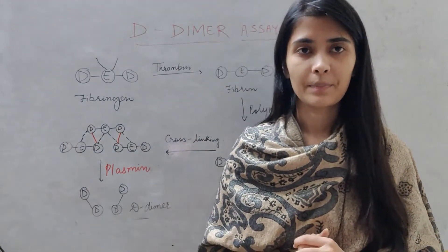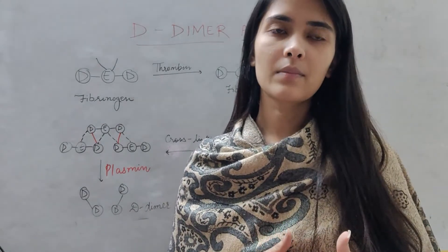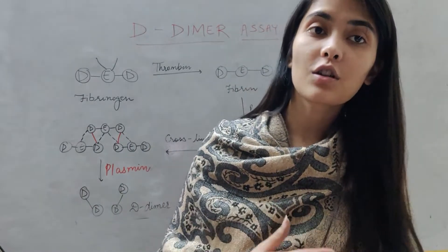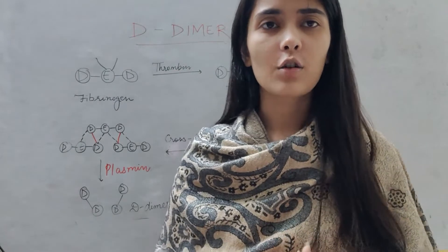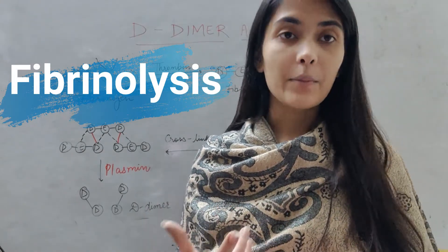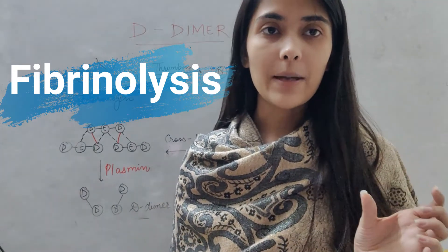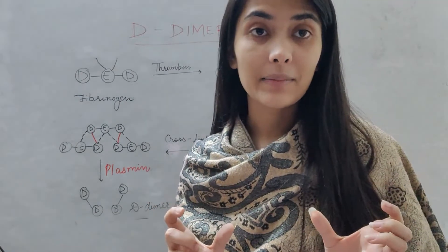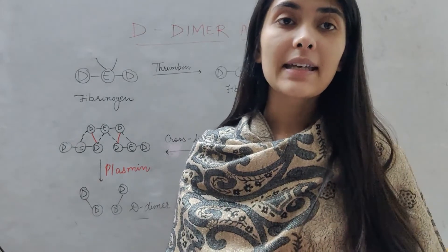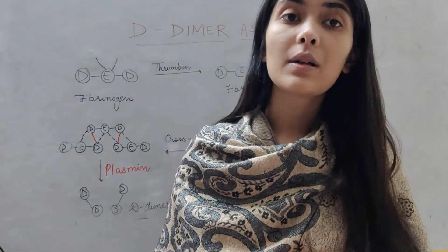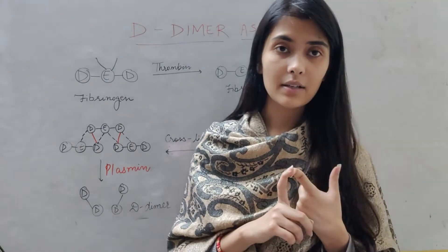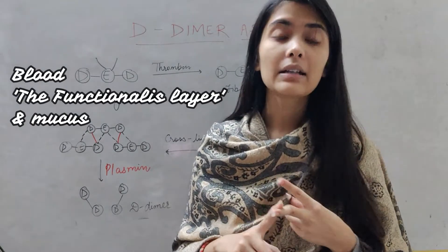But during menstruation, the formation of platelet plugs is itself reduced. There is also a formation of blood coagulation inhibition factors which help in the reduction of blood clot formation. Additionally, during menstruation, a process called fibrinolysis takes place — fibrinolysis meaning the breaking of fibrin. In fibrinolysis, there is formation of plasmin which helps in the cleavage of fibrin into soluble, degradable substances. So our menstrual blood basically consists of blood, the functionalis layer, and mucus.